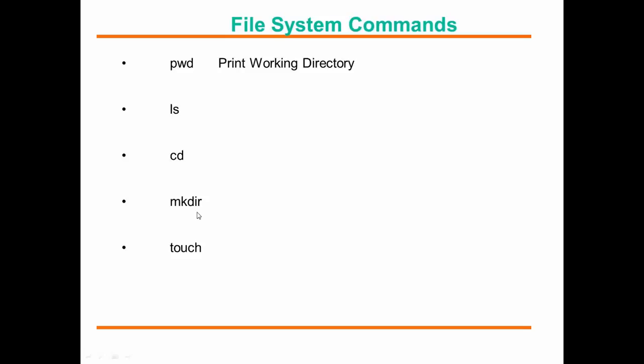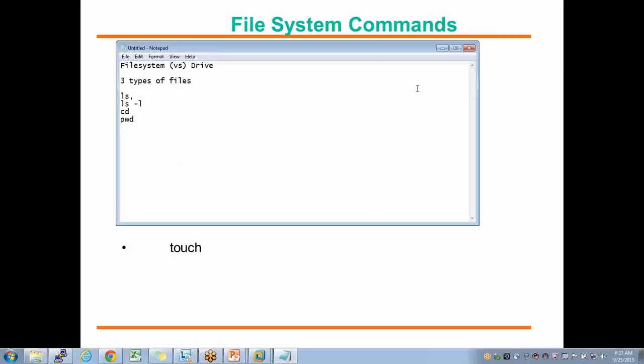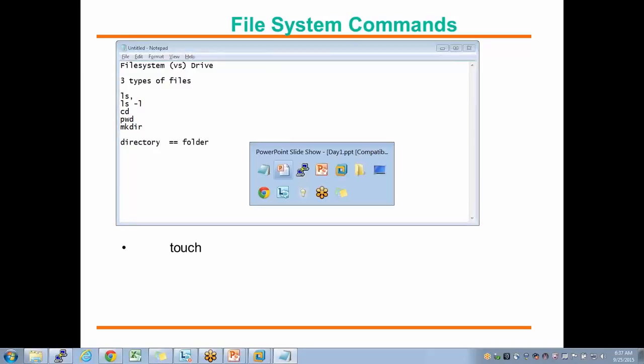There's another command called mkdir — make directory. How do you create a new folder in Windows? You right-click and select New Folder. But here in Unix or Linux, it happens through commands. The command is mkdir (make directory). The equivalent of a directory in Windows is a folder. So to create a folder here, the command is mkdir.